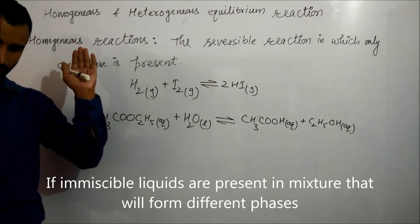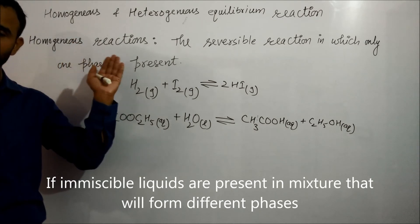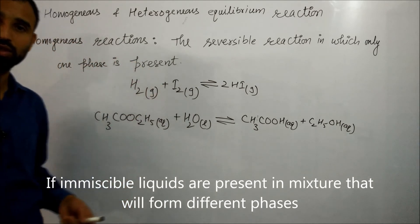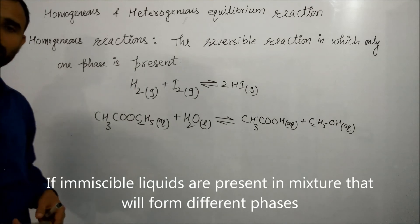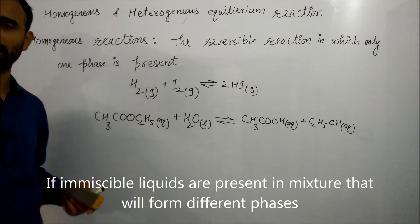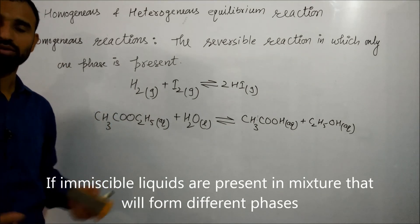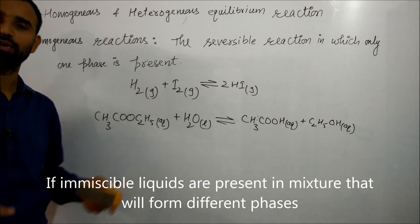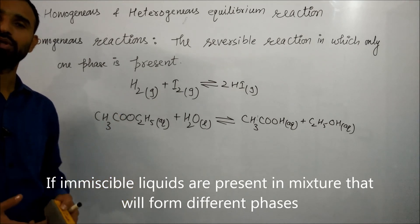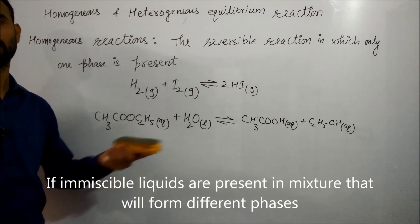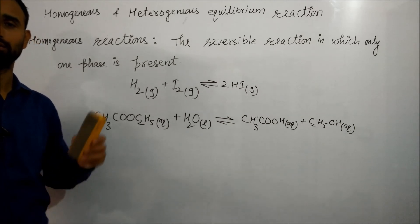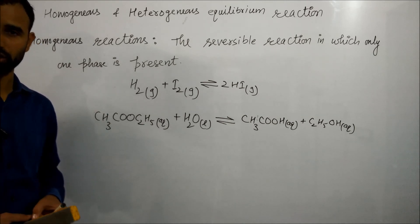As we learned, calcium carbonate (solid) gives calcium oxide (solid) and carbon dioxide (gas). That type of reaction is a heterogeneous equilibrium because there is more than one phase present in the reaction mixture.